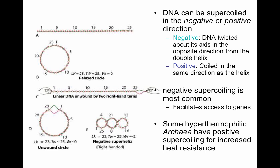DNA can be compacted in bacteria by either negative or positive supercoiling. In negative supercoiling, the DNA is twisted about its own axis in the opposite direction from the double helix, which is a right-handed helix. In positive supercoiling, the DNA is coiled in the same direction as the helix. Negative supercoiling is the most common in all microorganisms. Some hyperthermophilic archaea have positive supercoiling, which increases the resistance of the DNA molecule to heat.